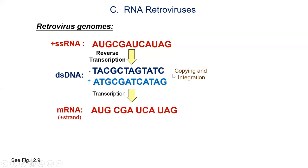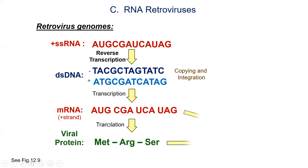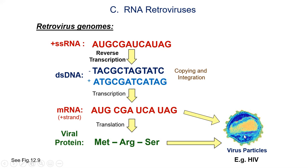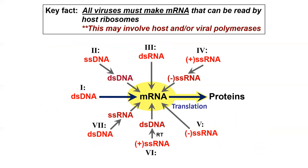After reverse transcription — and we'll talk about what the copying and integration looks like when we discuss HIV, probably next Tuesday — messenger RNA is eventually made and read by host ribosomes to make viral proteins. Those RNA strands are also used as genomes, and you get your virus particles. Don't get caught up in all the different strategies. The key facts are: all these viruses have to make messenger RNA, they have different types of genomes, and making new virus particles uses a combination of host enzymes and sometimes viral enzymes as well.